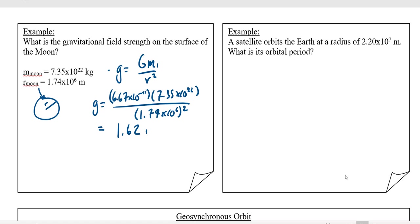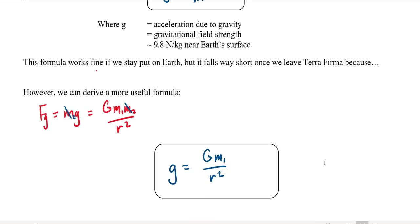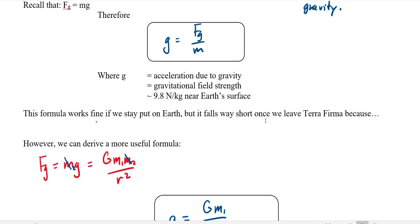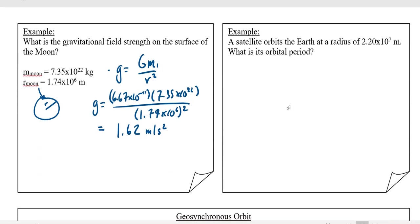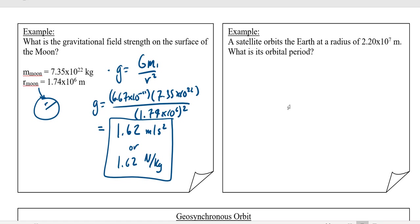Gravitational field strength can be measured in meters per second squared because we know it's an acceleration. But just as a reminder, gravitational field strength is force of gravity divided by mass, so a meter per second squared must be the same thing as a newton per kilogram — those are the exact same units. When things are accelerating we tend to use m/s², but when talking about gravitational field strength we often use newtons per kilogram.